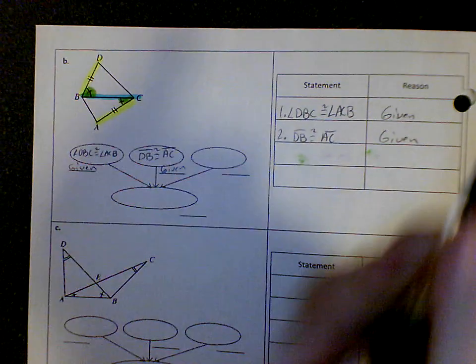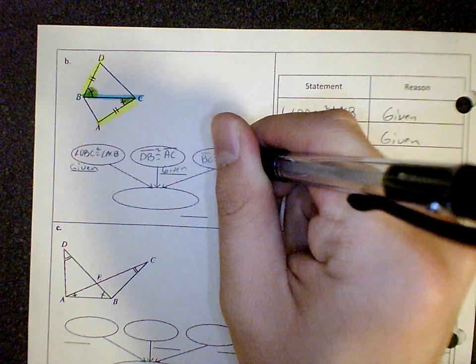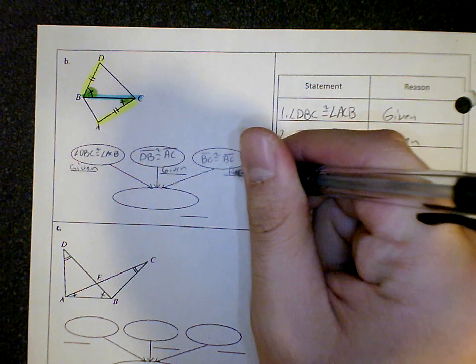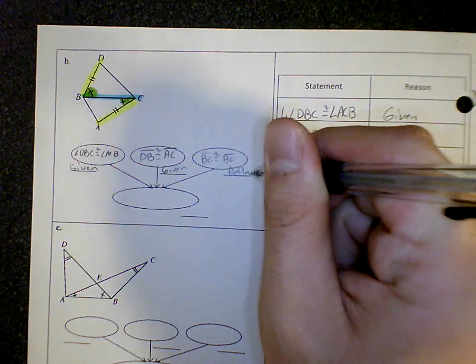So I know that BC is congruent to BC. And that is going to be any time something is congruent to itself, it's reflexive.